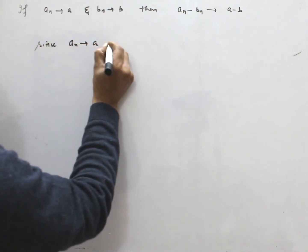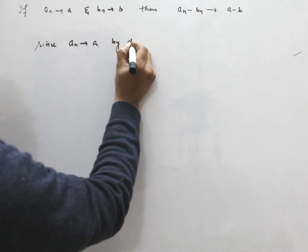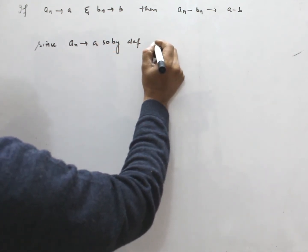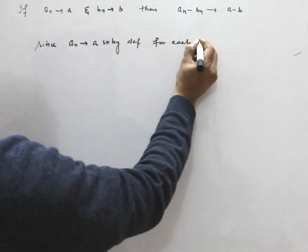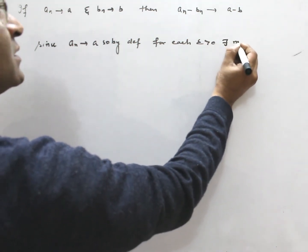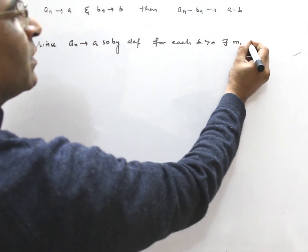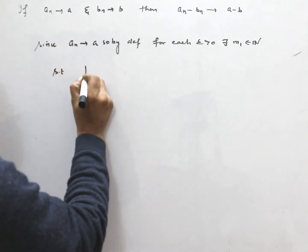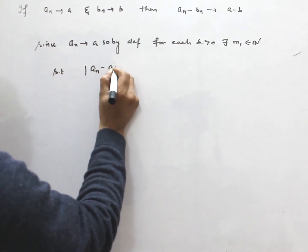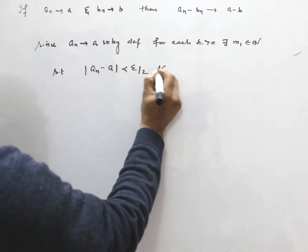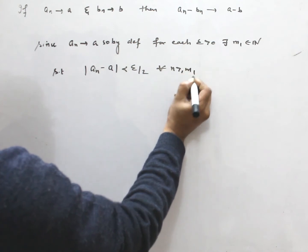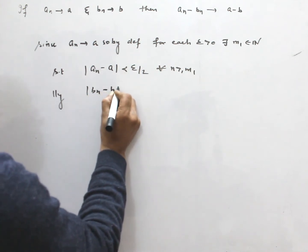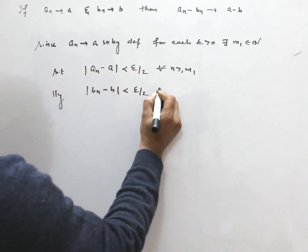Since aₙ converges to a, by definition, for each epsilon greater than 0 there exists M₁ in ℕ such that |aₙ - a| < epsilon/2 for all n greater than M₁. Similarly, |bₙ - b| < epsilon/2 for all n greater than M₂.